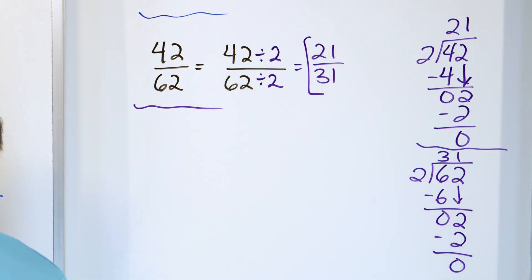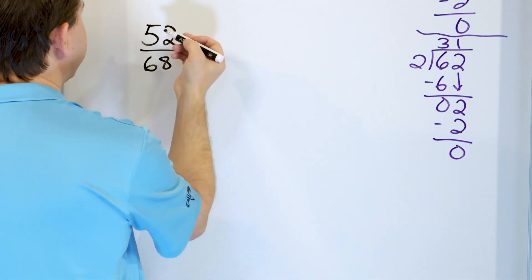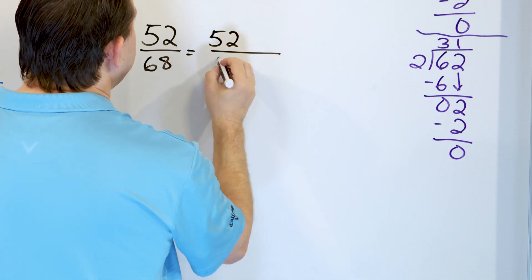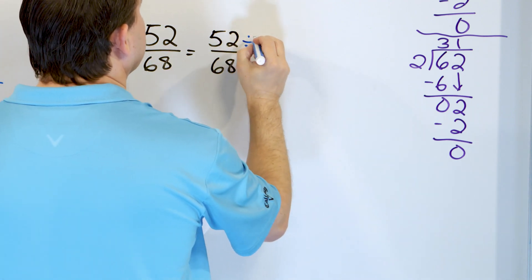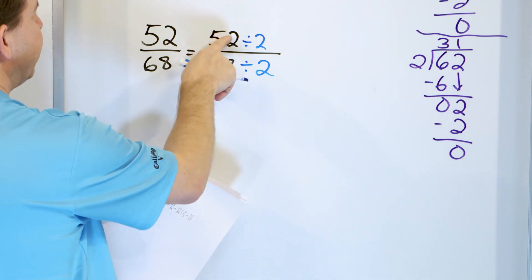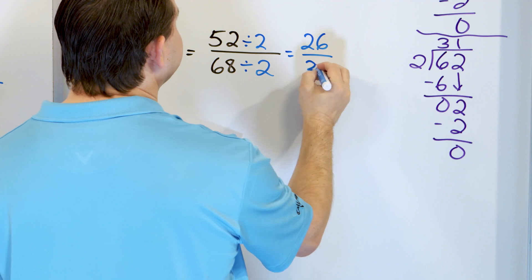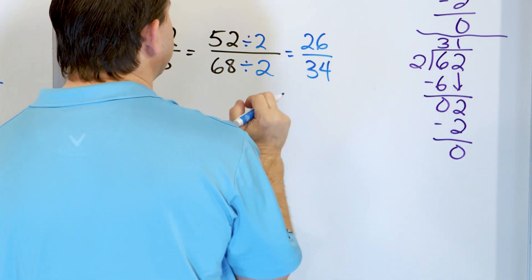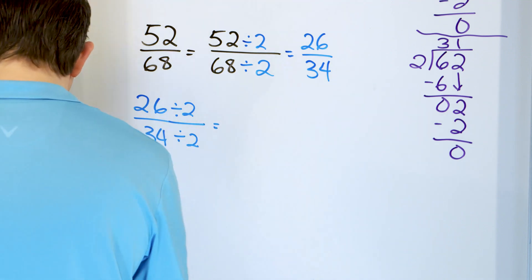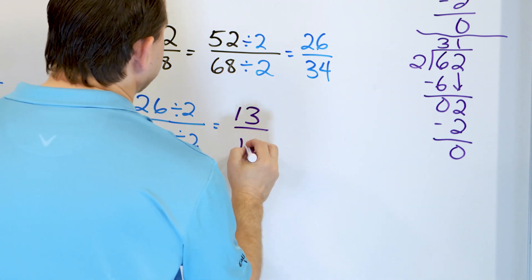Problem 10: 52/68. Same sort of thing - both even numbers. Divide the top by 2 and the bottom by 2. 52 divided by 2 gives 26, and 68 divided by 2 gives 34. So 26/34 - these are again even numbers, so divide by 2 again. 26 divided by 2 is 13, and 34 divided by 2 is 17. The answer is 13/17.